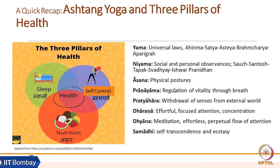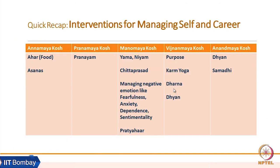Based on these insights of Ayurveda, the notion of self, and the eight limbs of yoga, we have identified a set of interventions which we are going to look at in this course. At the Annamaya level, we are going to look at ahar and asanas as predominant interventions.